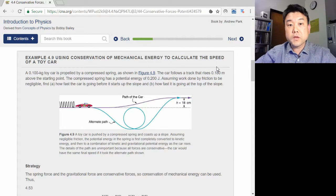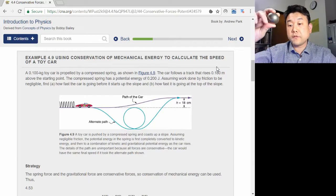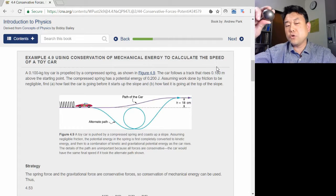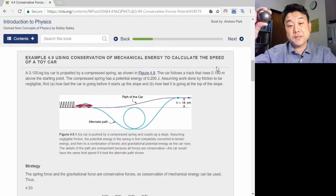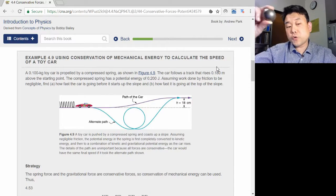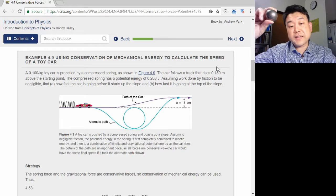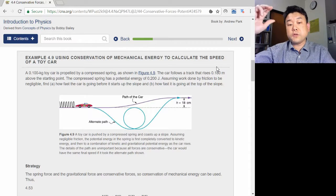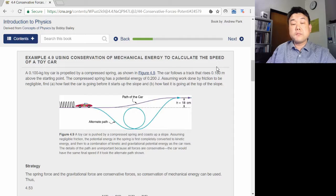So the negative work done by a conservative force isn't really lost. No more than money you deposit into your bank account is money lost. It's energy stored into a form that is not kinetic energy. We call this new form of energy, potential energy.